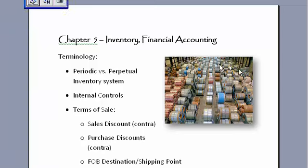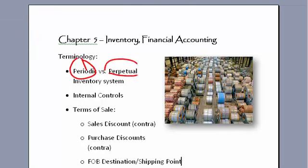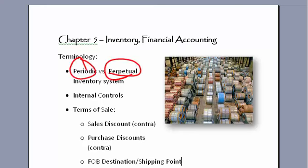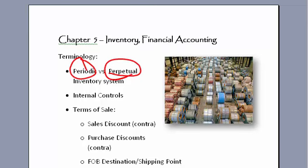The first issue here is with inventory: are we working under a periodic or a perpetual system? A perpetual system would be what you use for a business that has high-dollar, high-ticket items but doesn't sell very many — somebody selling fur coats or yachts, those kind of items.